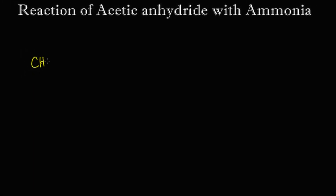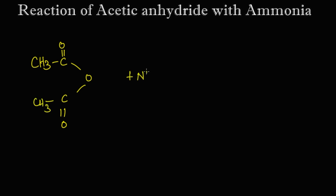Come on, let's learn the reaction. Acetic anhydride — that is CH3C(=O)-O-C(=O)CH3 — this is acetic anhydride. We are going to react ammonia, that is NH3, with this. What happens during the reaction?